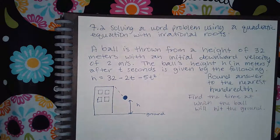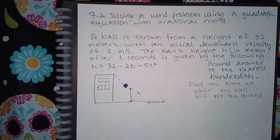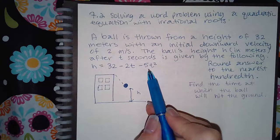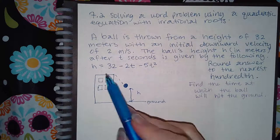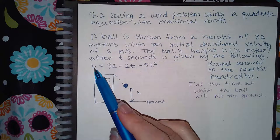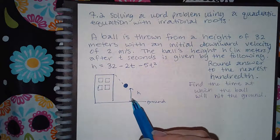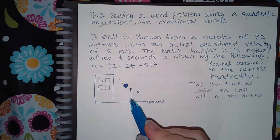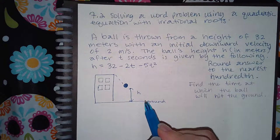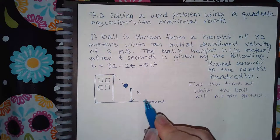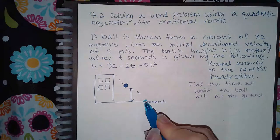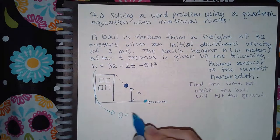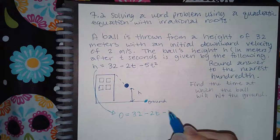In order to do that, I have to take into account what's going on. I'm trying to find the time, so t is what I'm going to be looking for. But I need to have a number for h, and that number is going to be the height at which the ball hits the ground. When it hits the ground, that height is going to be 0. There will be no distance between the ground and the ball anymore. So basically we're setting this equal to 0 and then trying to solve this resulting equation.